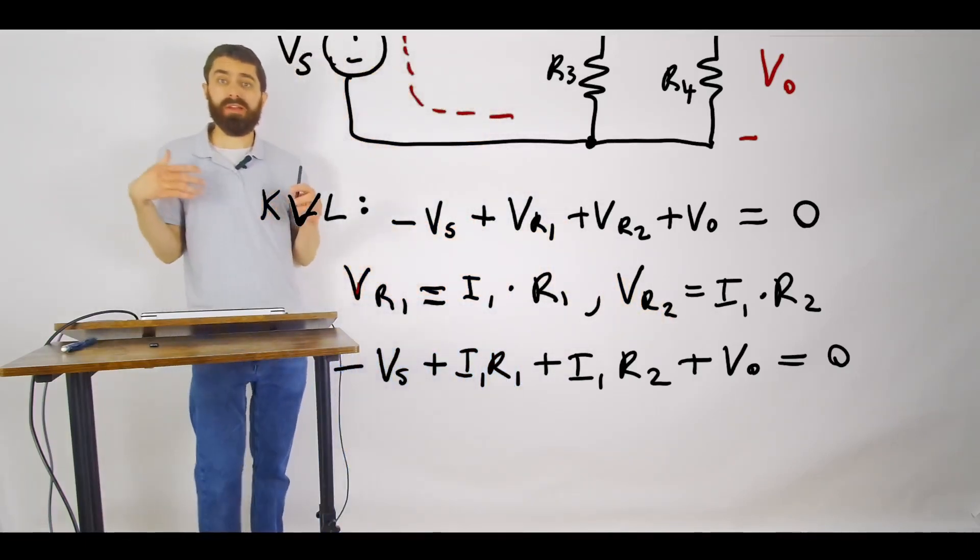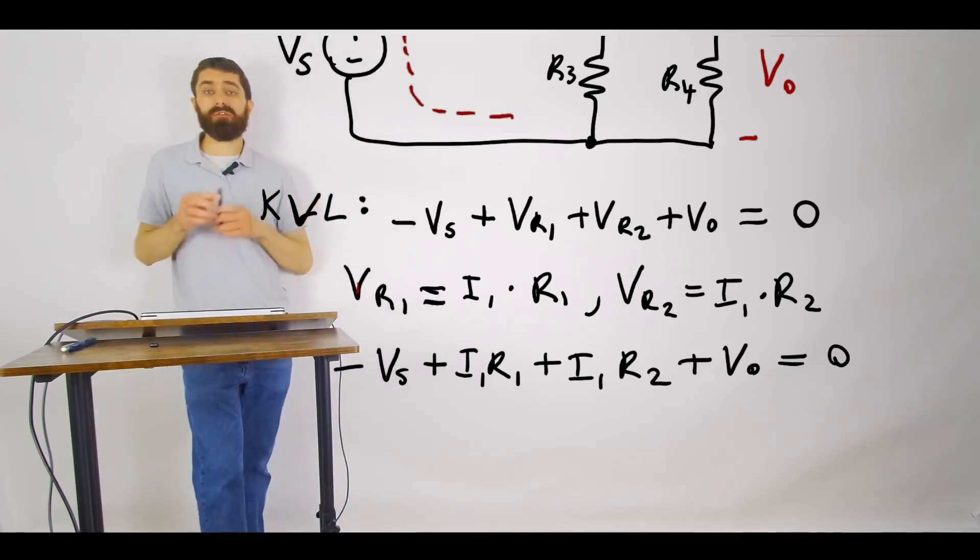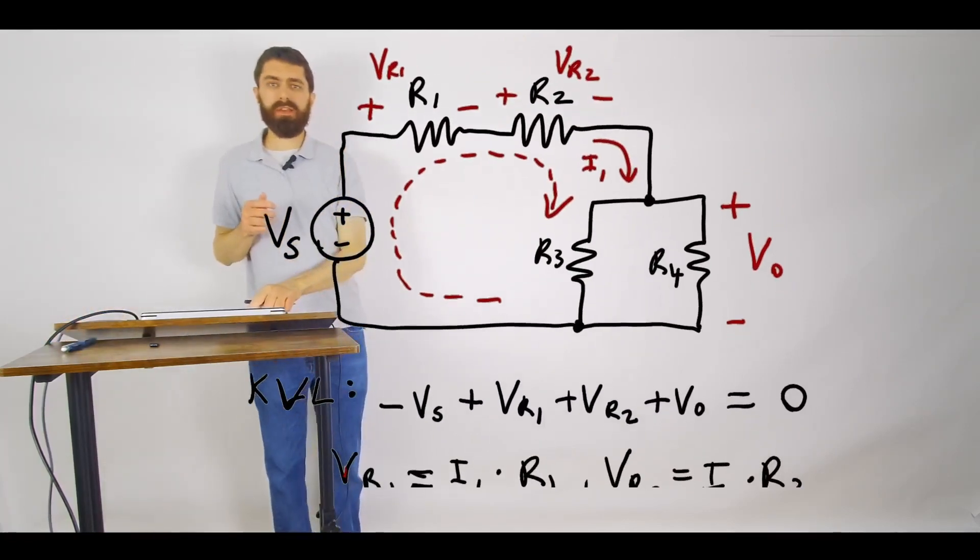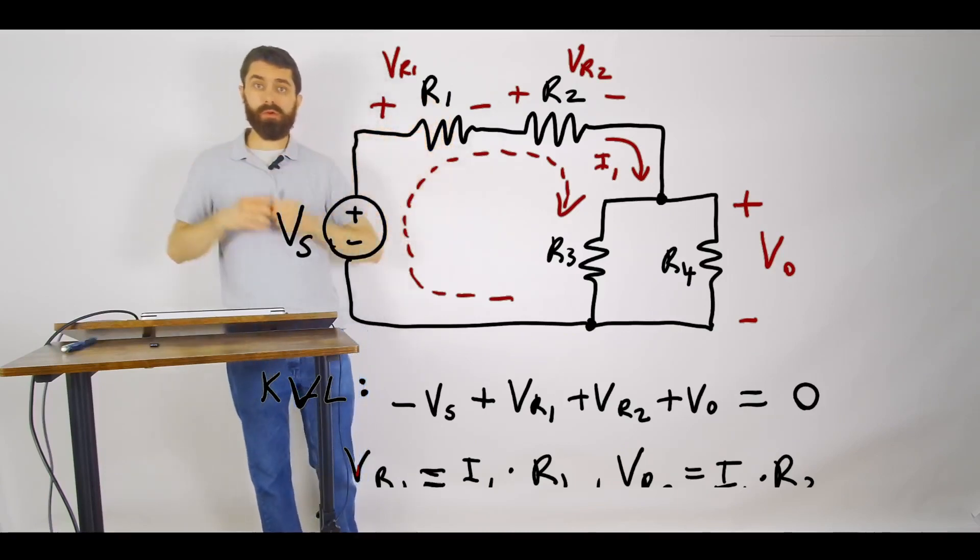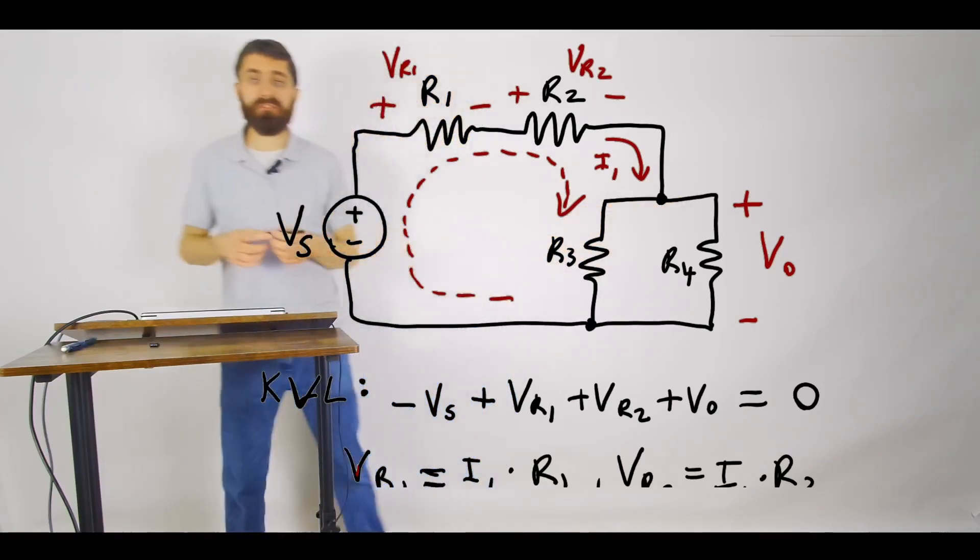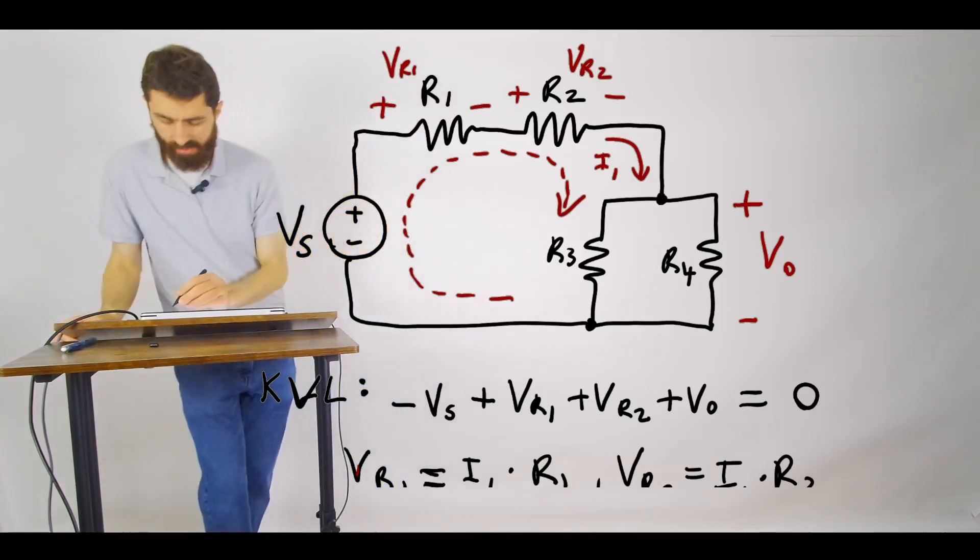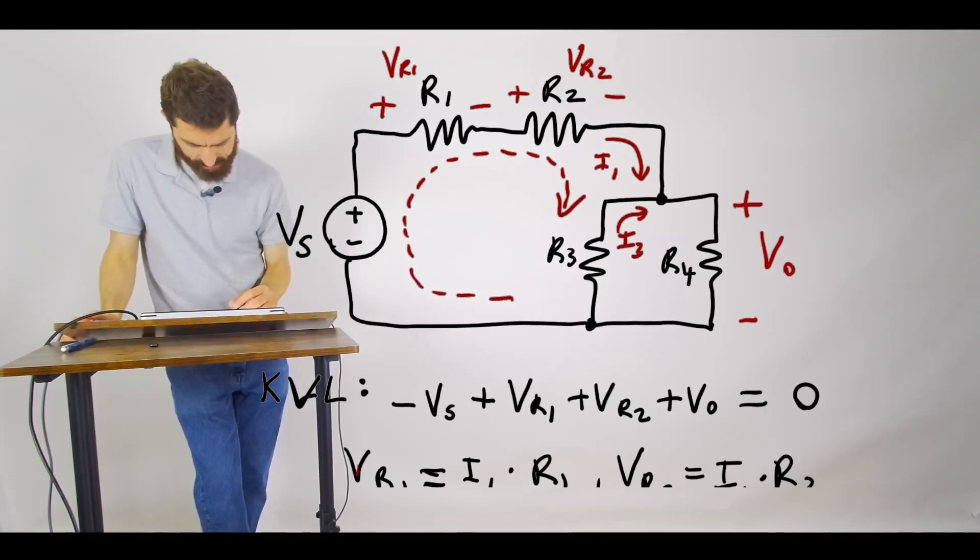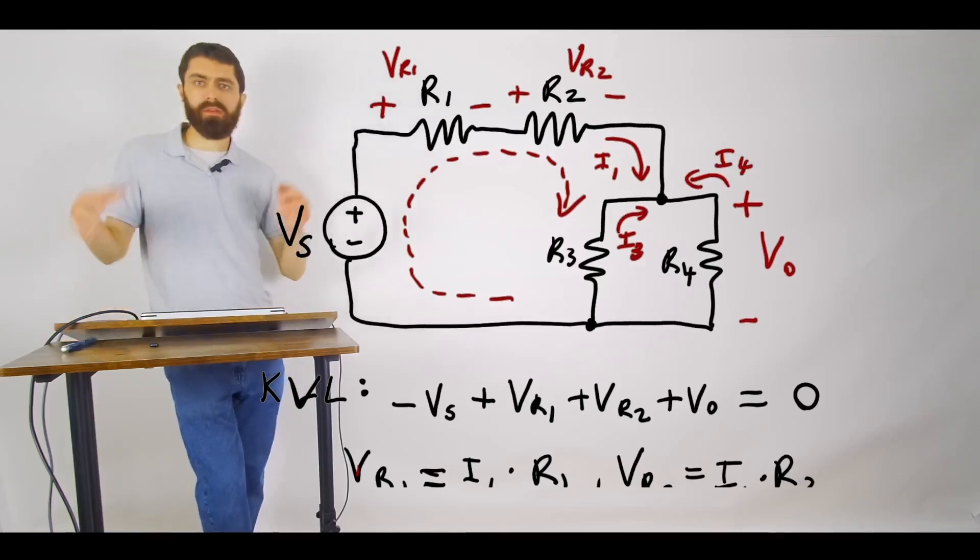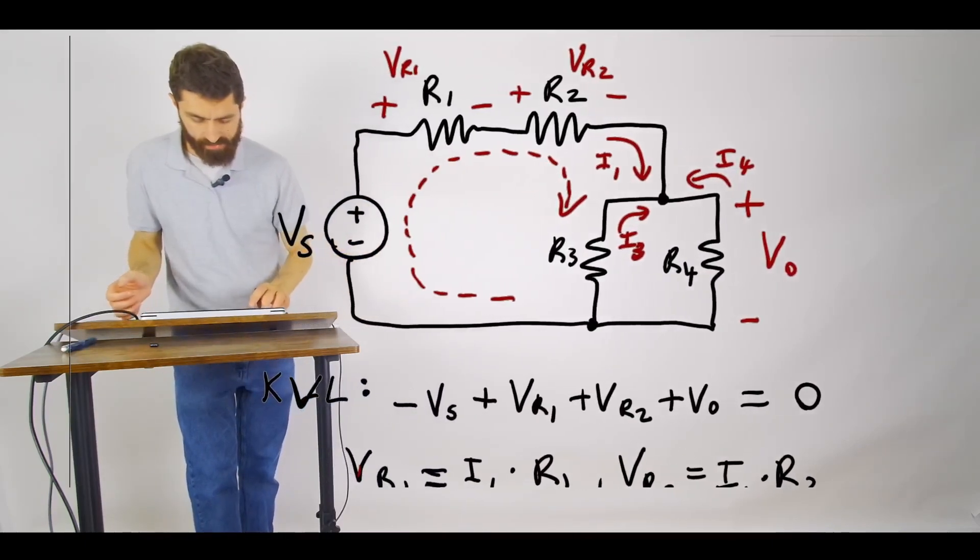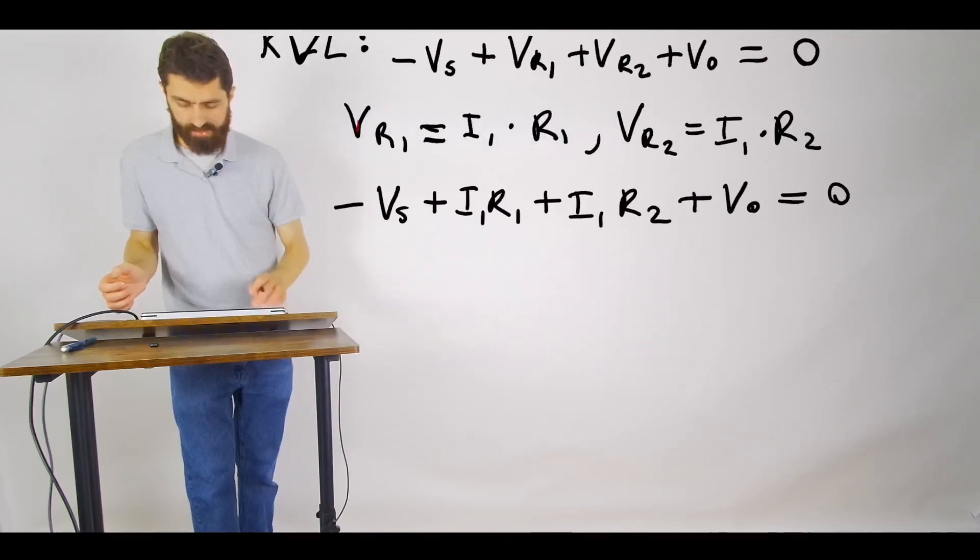So the way that you can find I1 is by applying Kirchhoff's current law. So Kirchhoff's current law states that the sum of the currents going into a node is equal to zero. So let's go ahead and define our currents as going into the node, all the currents, so this one we'll call this one I3 going into the node, and this one I4 going into the node.